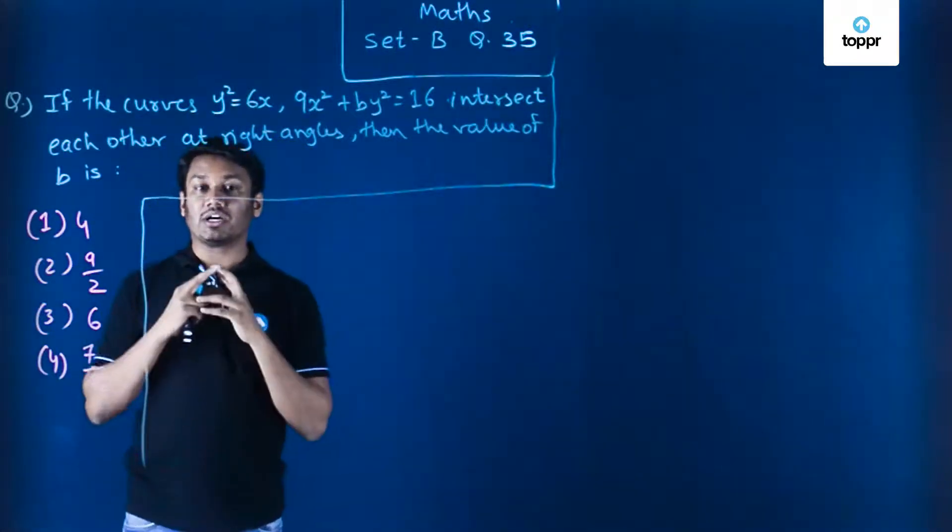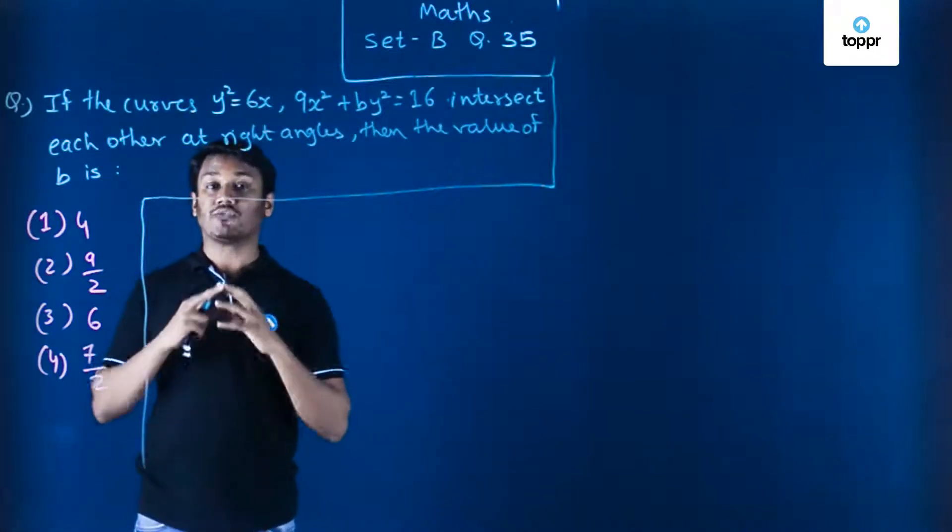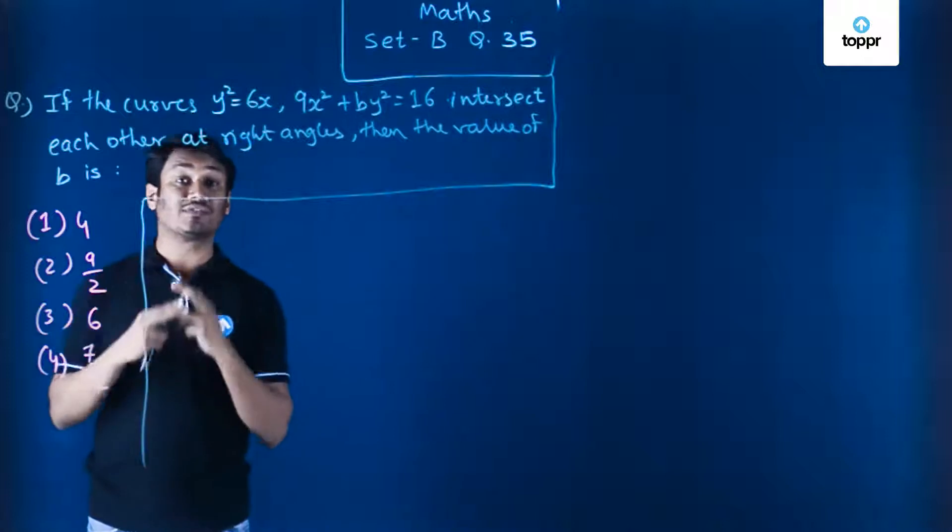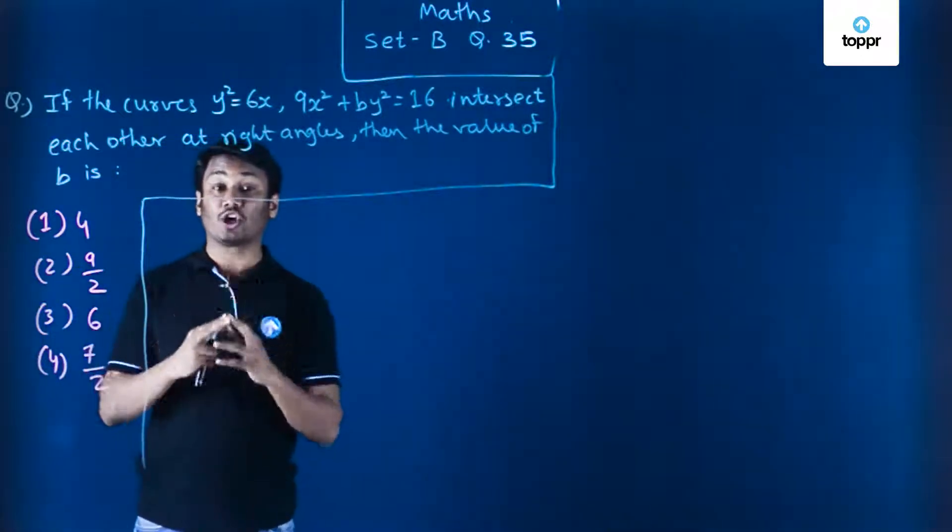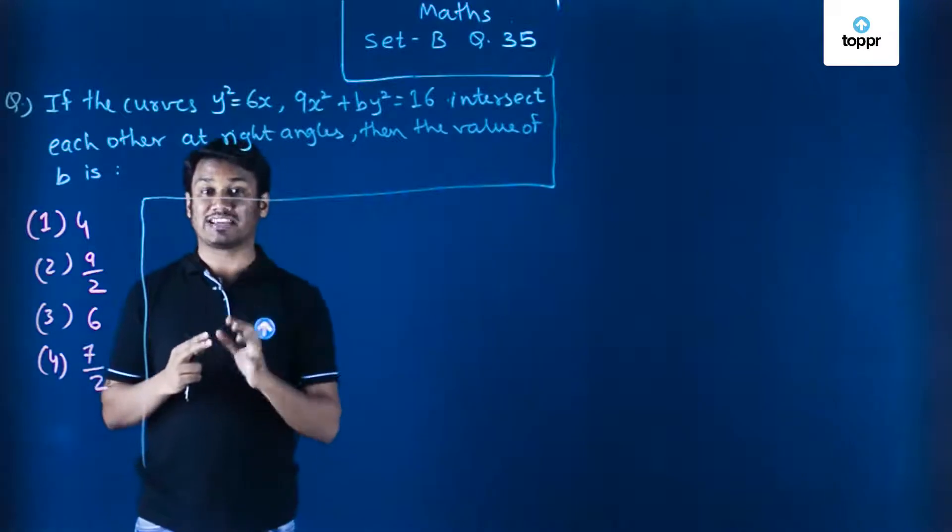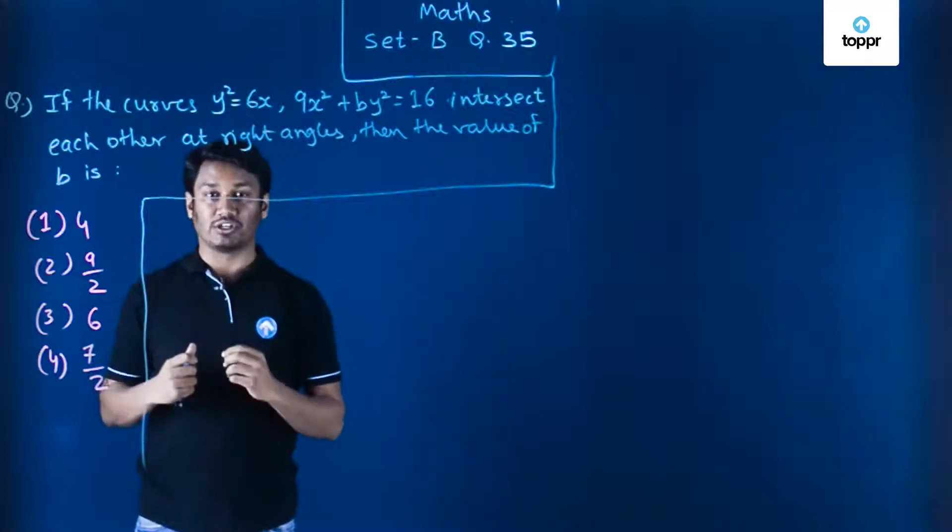Now we will consider the product of these two slopes equal to minus 1, because we know that whenever two curves are intersecting at right angles, it simply means that if I draw tangents at the points of intersections of those two curves, then those two tangents will be perpendicular to each other.